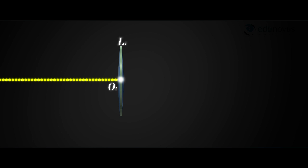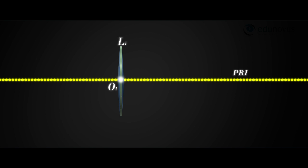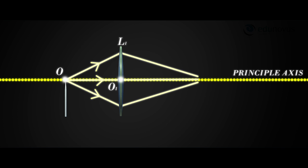Consider a convex lens L1. O is the optic centre of the lens, and the line passing through the optic centre is the principal axis. An object needle O is placed on the left side of convex lens L1, and its real inverted image I is located by the image needle.